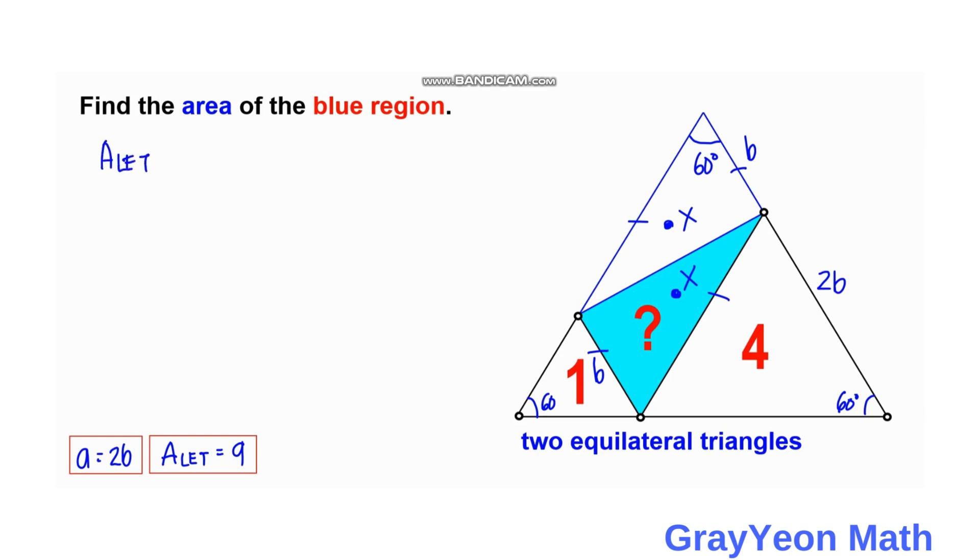So the area of LET - we need to write an equation first. The regions are actually x plus x plus these two triangles, so 4 plus 1. Area of LET is 9, so 9 equals x plus x plus 5.